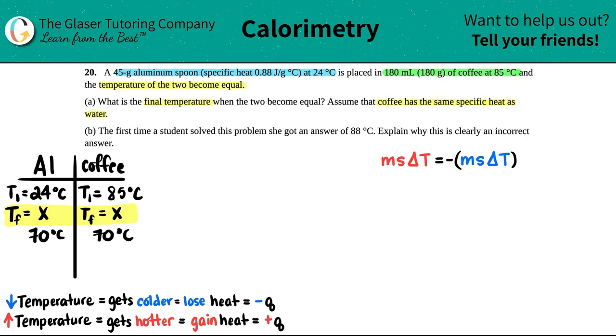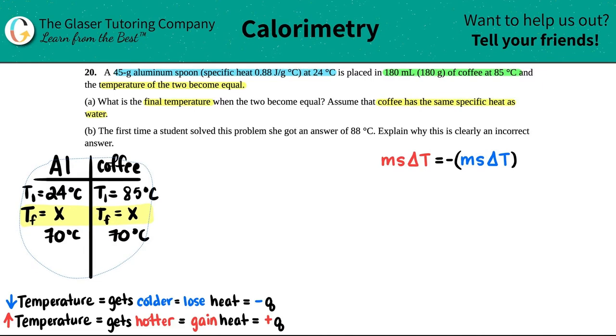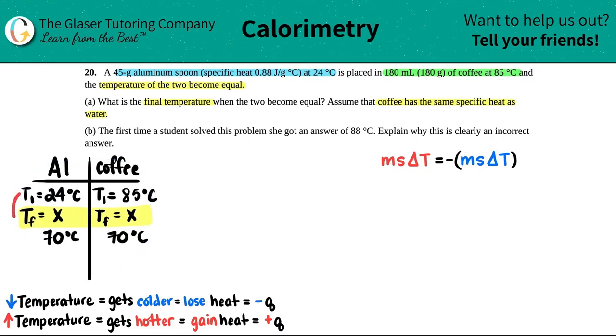Now we can see for aluminum, from 24 to 70 it's going up—the temperature is rising, it's getting hotter. This has to be the positive side. Since my temperature is increasing, I'm on the positive side, I'm gaining heat. The same for the other side: 85 to 70, it's dropping. Since my temperature is dropping, I know that I'm on the negative side. Perfect, this side is aluminum and this side is the coffee.